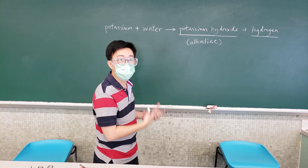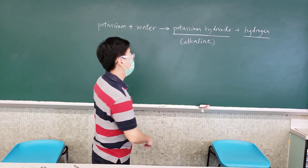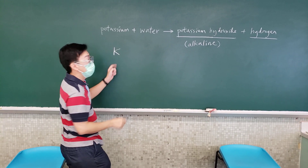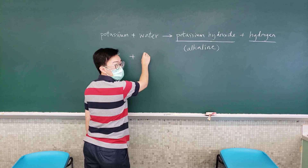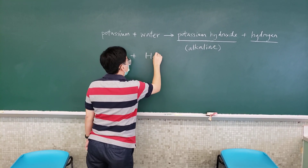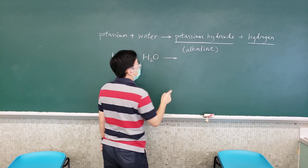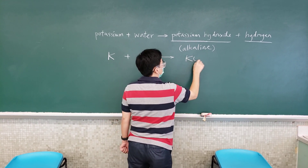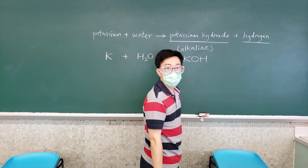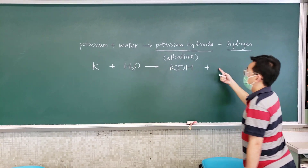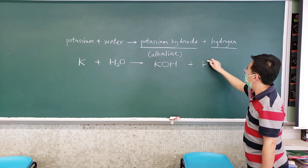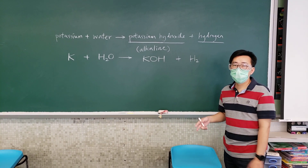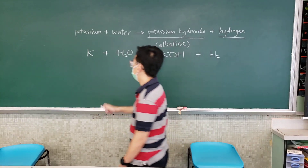We can further write a chemical equation for the reaction involved. Potassium, we write K. Water — H₂O. Potassium hydroxide — KOH. And hydrogen — H₂. To make it a complete and balanced chemical equation, you need to add some coefficients.